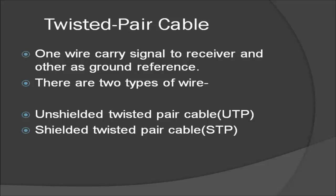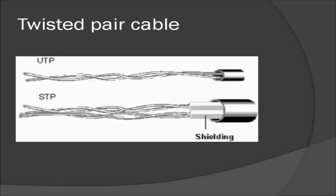There are two types of twisted pair cable. One is the unshielded twisted pair cable, known as UTP, which is the most commonly used in communication. The other is the shielded twisted pair, STP, which has a metal foil covering the pairs of insulated conductors. This metal casing improves the quality of the cable by preventing the penetration of noise.